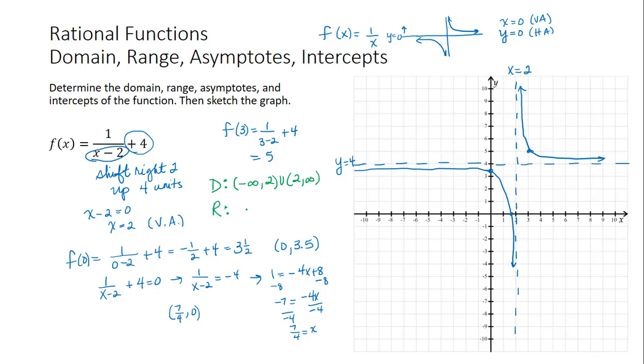And the range, as we go from bottom up, the graph extends infinitely downward and it approaches this line y equals 4 without crossing. And then it's above the line y equals 4 and goes up to infinity. So it's all real numbers except for 4, which is negative infinity to 4, union 4 to infinity.